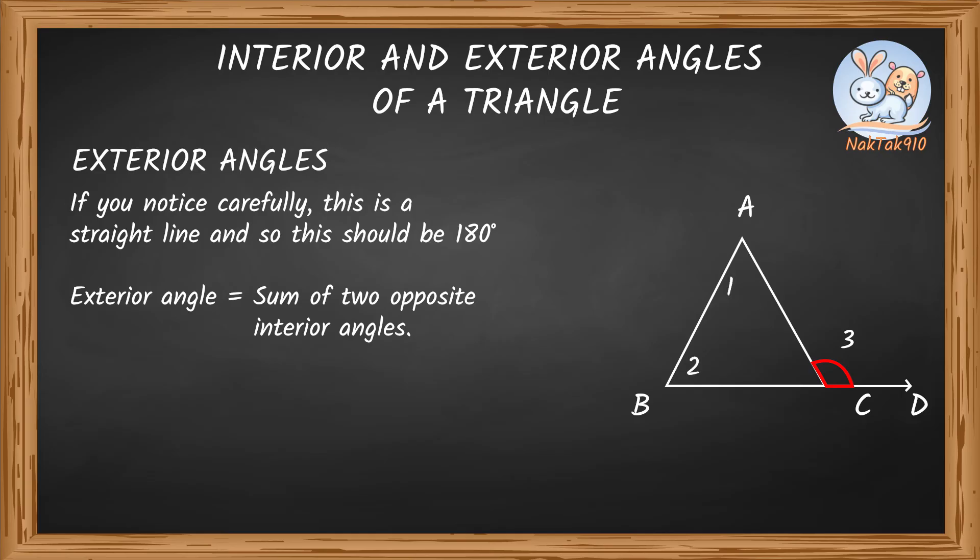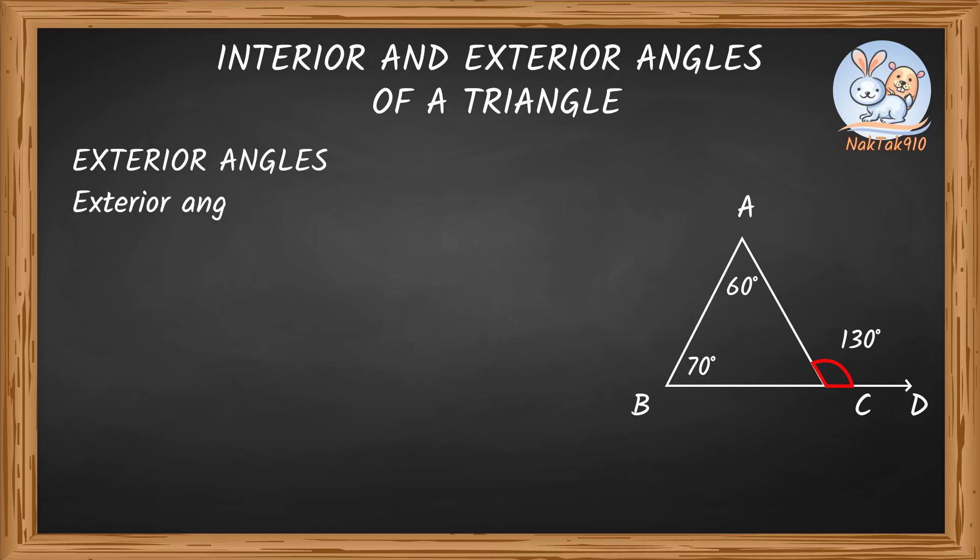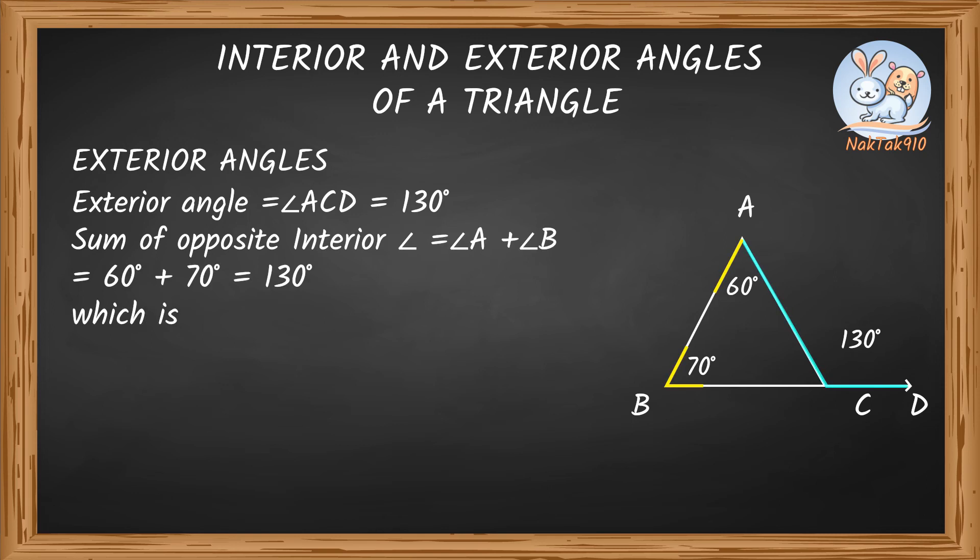Exterior angle is equal to sum of two opposite interior angles. Angle 3 equals angle 1 plus angle 2. Exterior angle equals angle ACD which gives us 130 degrees. Sum of opposite interior angles equals 60 degrees plus 70 degrees and that's 130 degrees which is equal to the exterior angle.